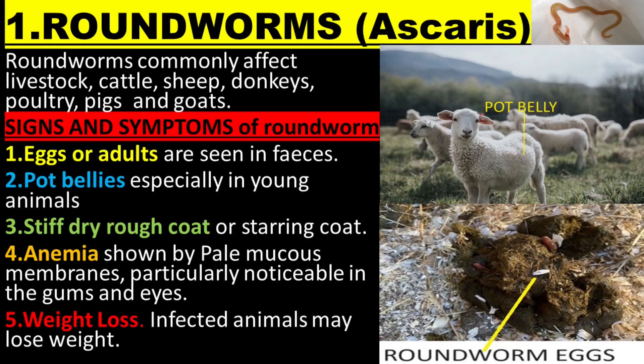Round worms commonly affect livestock such as cattle, sheep, donkeys, poultry, pigs, and goats.